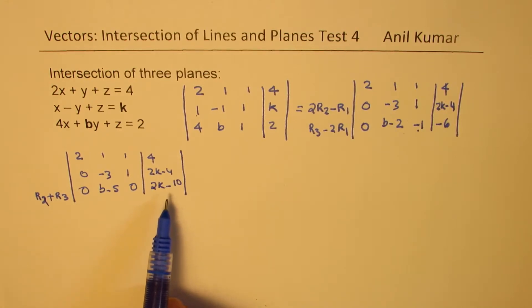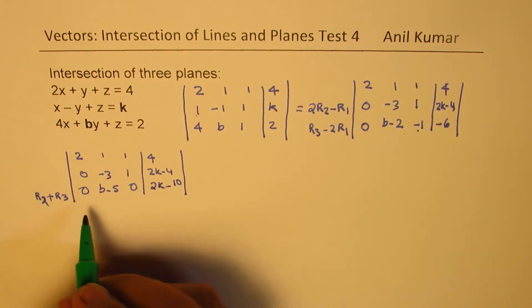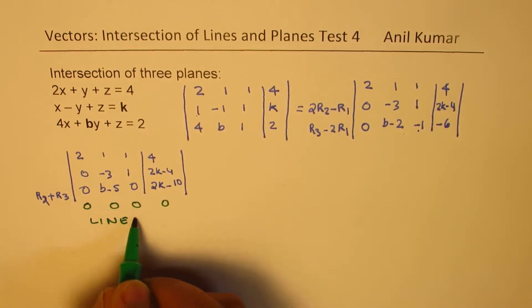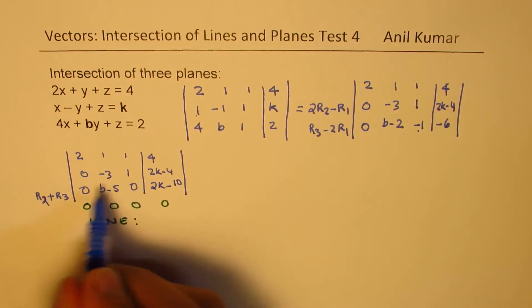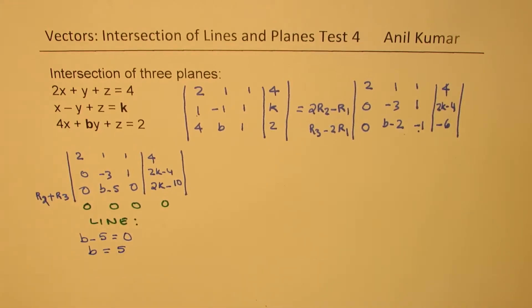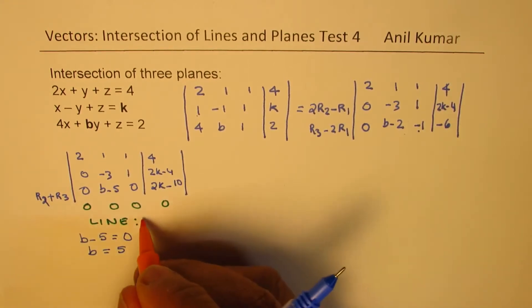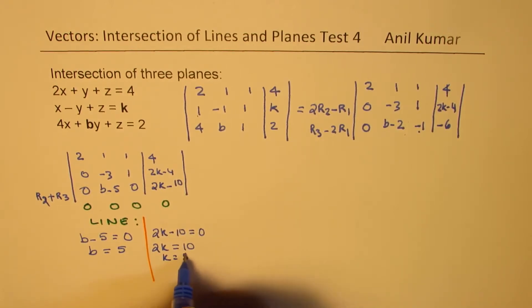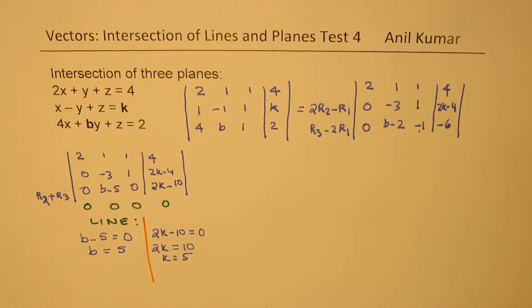Now in this particular situation, since we got 2k minus 10 here, to get 0, 0, 0, that will give us a line as a solution. What will happen? We have to make b minus 5 as equal to 0. That means b is equal to 5. That is one case. And the second thing which we need to do is to write 2k minus 10 equals to 0. So we get 2k equals to 10 or k equals to 5.